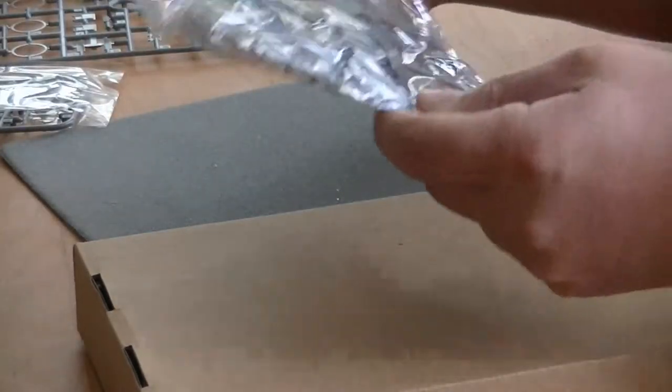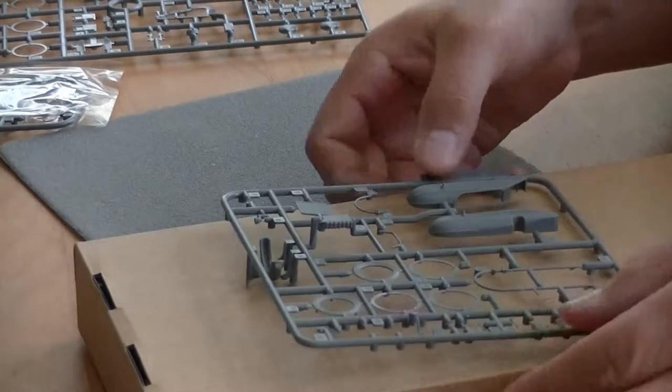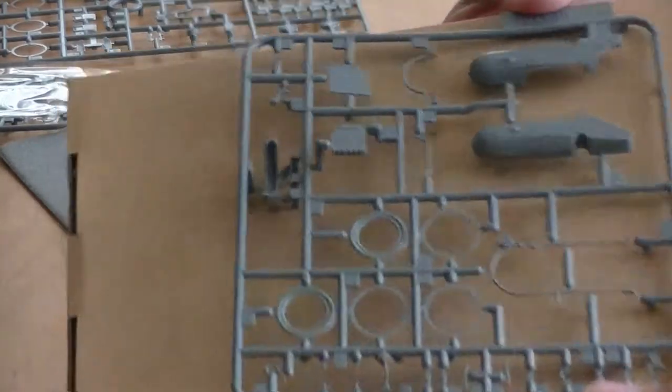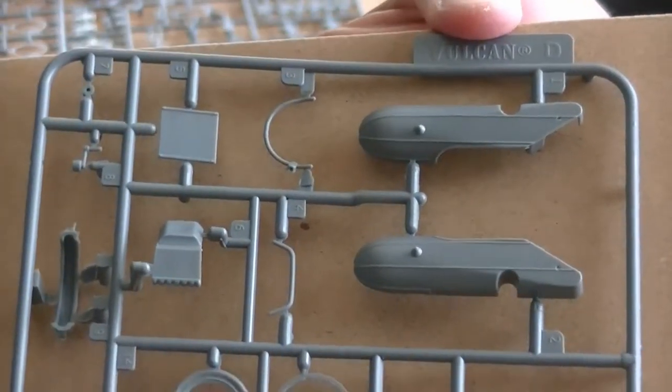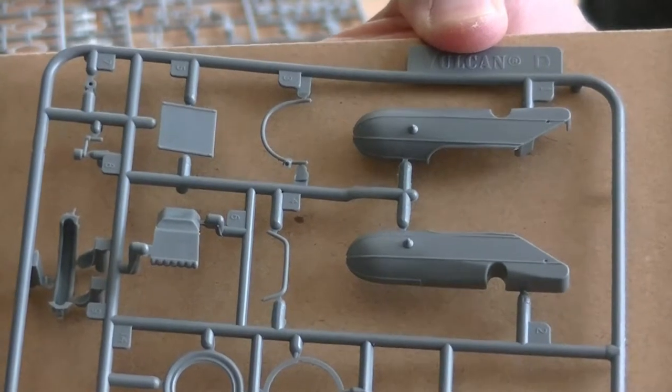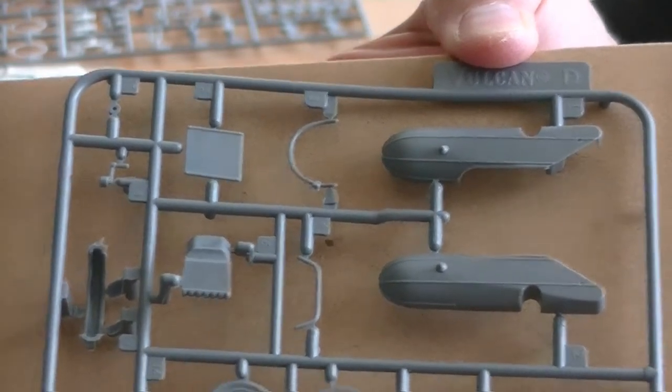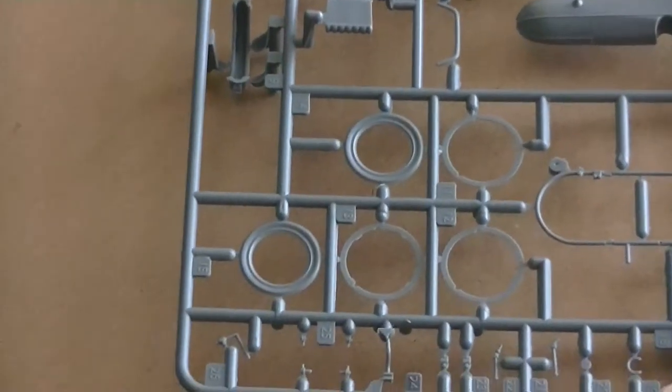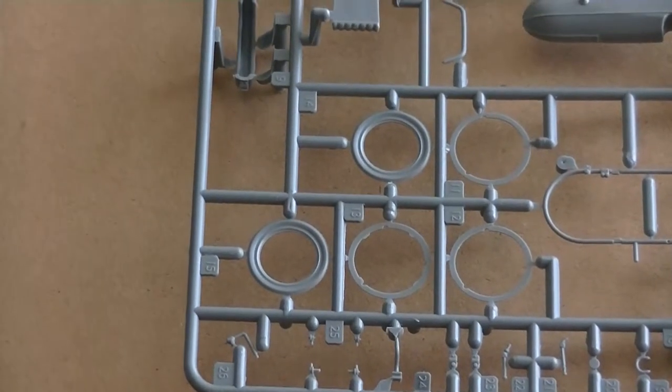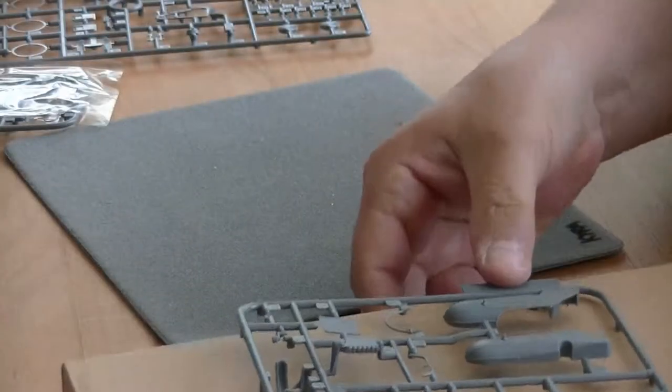The second sprue is the sidecar. We got the sidecar in itself, which is nicely molded and you cannot see it, but it gets even a structure on the surface because it's not flat. And also the wheels for the boat and the boat parts. Same quality, crisp, no flash.